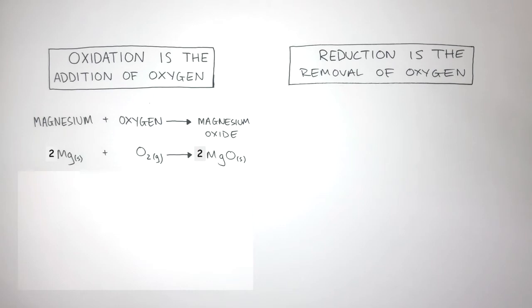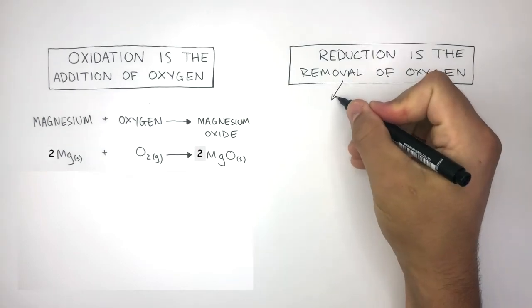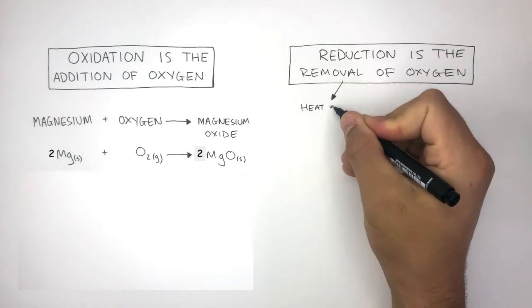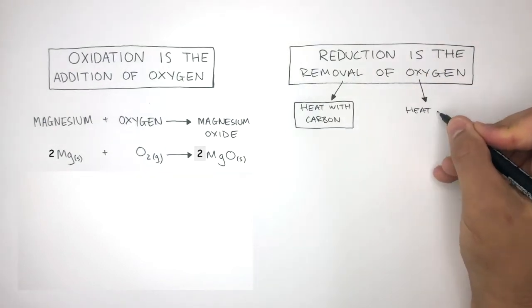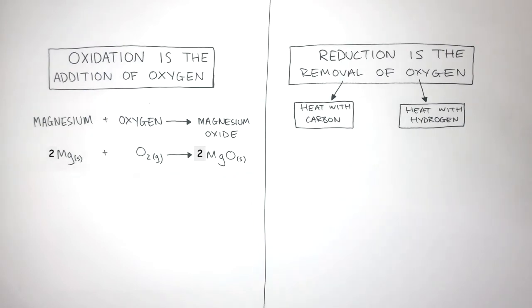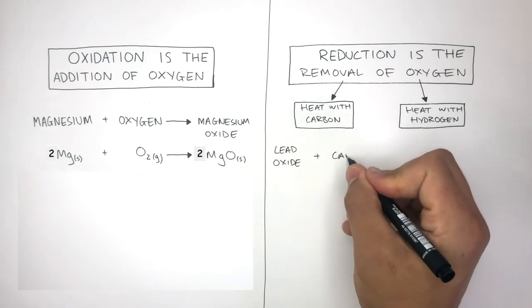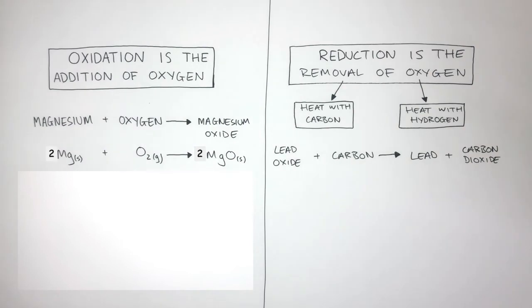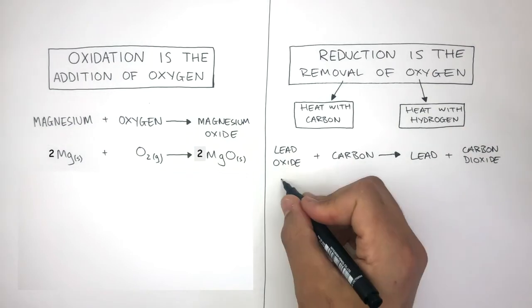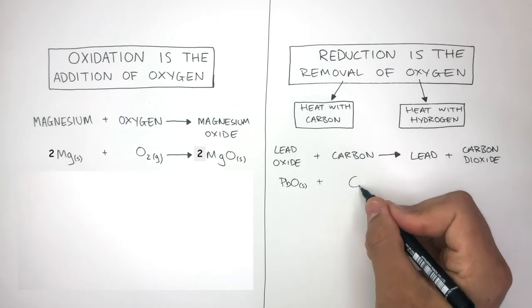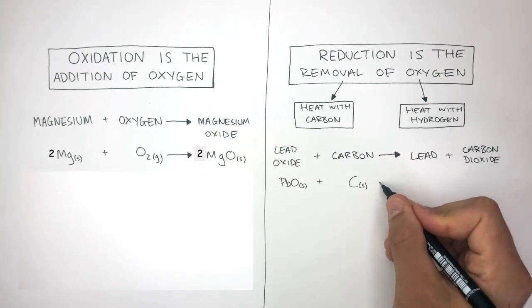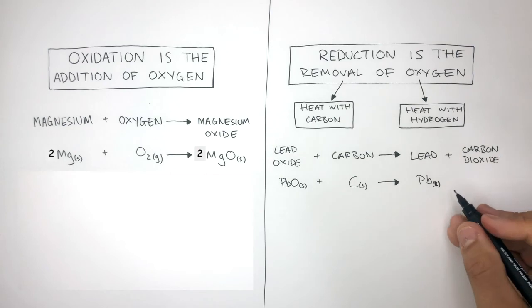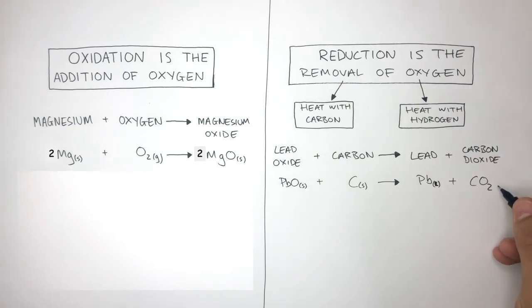Now we already know reduction is the removal of oxygen from its compound. And this takes place when the compound is either heated with carbon or heated with hydrogen. An example of reduction by heating with carbon is lead oxide plus carbon reacts to form lead plus carbon dioxide. The balanced symbol equation is PbO, S for solid, plus C, S for solid, reacts to form Pb, L for liquid, plus CO2, G for gas.